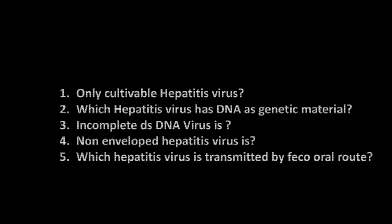Now let's revisit the MCQ questions from the beginning. The only cultivable hepatitis virus is Hepatitis A virus — this was not mentioned in the slide. Which hepatitis virus has DNA as its genetic material? It is Hepatitis B, and importantly it does not have complete double-stranded DNA — it has incomplete double-stranded DNA. Which hepatitis viruses are non-enveloped? Hepatitis A and Hepatitis E. Which hepatitis viruses are transmitted by the feco-oral route? Again, Hepatitis A and Hepatitis E.